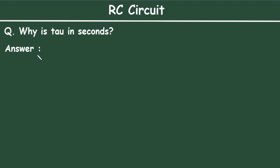Answer for this question: why is tau in seconds? For an RC circuit, tau is given by τ = R × C, and its unit is seconds.